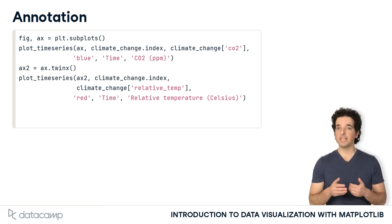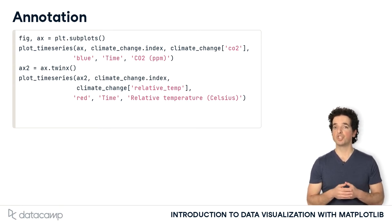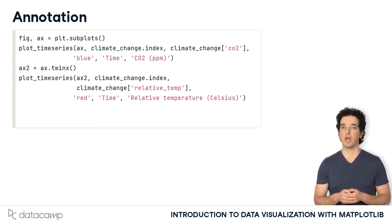For example, let's say that we noticed that the first date in which the relative temperature exceeded 1 degree Celsius was October 6th, 2015. We'd like to point this out in the plot. Here again is the code that generates the plot, using the function that we implemented previously.